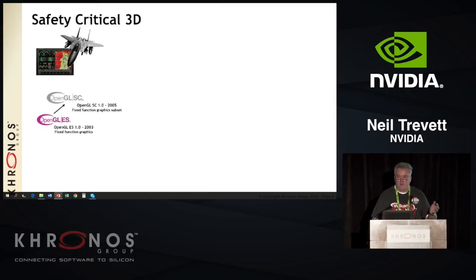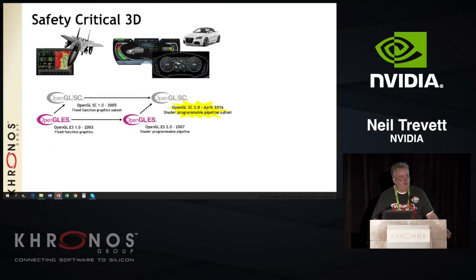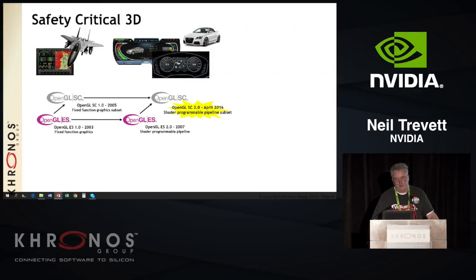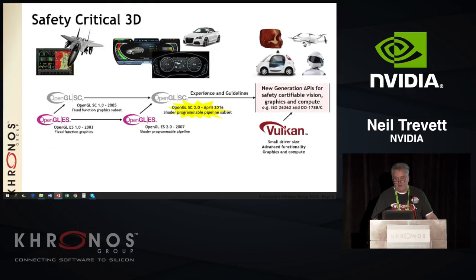Last thing before I hand over: it's not OpenGL desktop, it's OpenGL safety critical. OpenGL SC 1.0 was released back in 2005 for Avionics as a subset of OpenGL ES 1.0. Now the automotive folks have got interested in safety critical drivers, so we have OpenGL SC 2.0, which is a subset of ES 2, because car consoles need a little bit more eye candy than Avionics displays. That was released back in April.